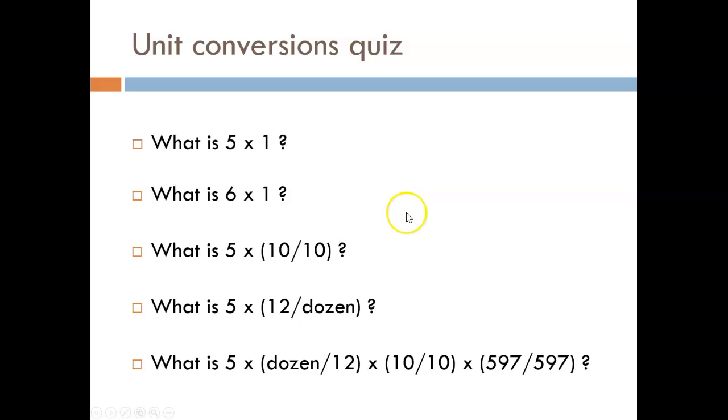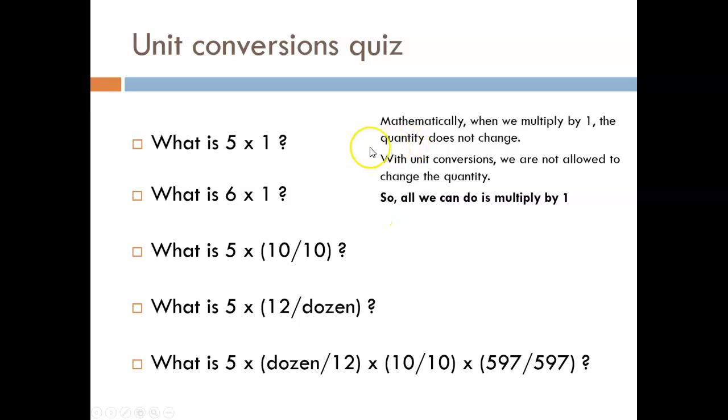I hope the big idea is clear. Any quantity multiplied by 1 is not being changed, and this is all we are allowed to do with unit conversions. If I measure a desk to be 4 feet long, that physical quantity is fixed. The desk is not changing length. If I want to express the length in inches, the number may change, but the measurement remains the same. So, all we can do is multiply by 1. Keep this in mind. I might show you a trick problem in a couple of slides.